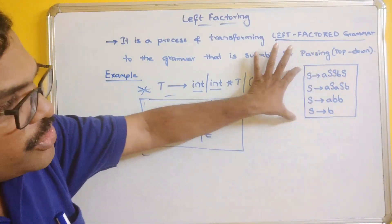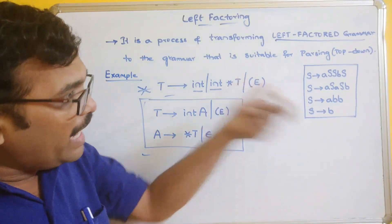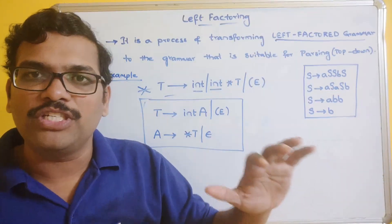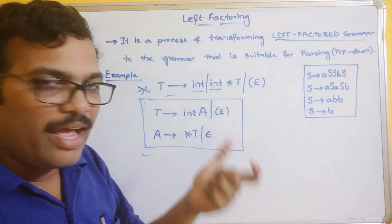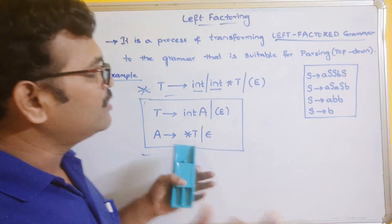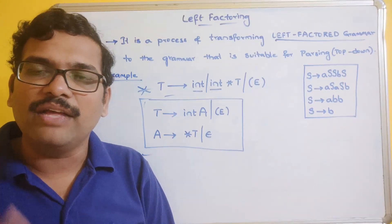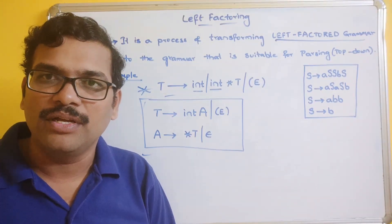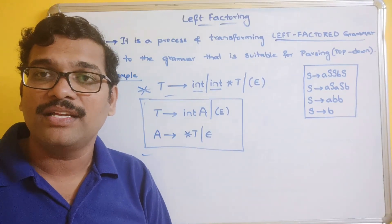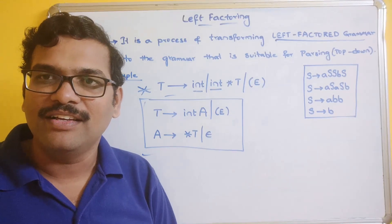Now consider this production, solve it, eliminate the left-factored grammar, and transform it to the grammar suitable for top-down parsing. Post the result in the comment section. If you have any doubts, feel free to post them in the comments and I will try to clarify. If you enjoyed this session, like and share it with your friends, and don't forget to subscribe to our channel. Thanks for watching.